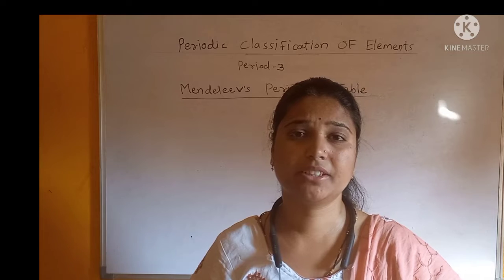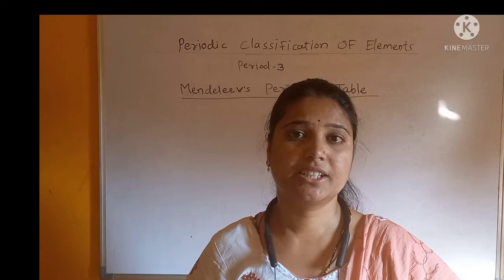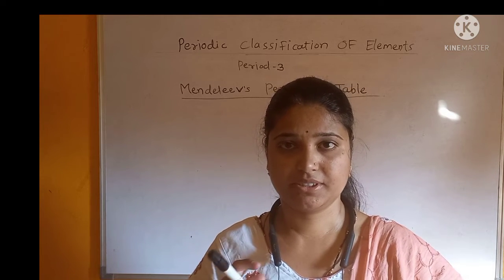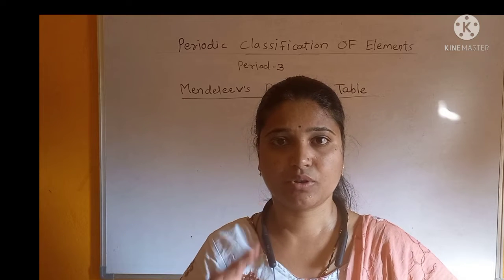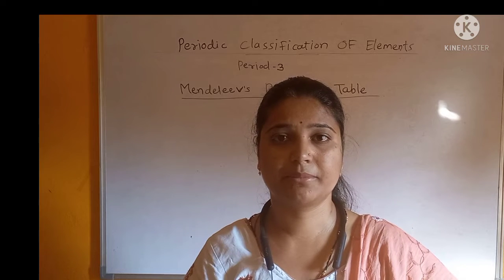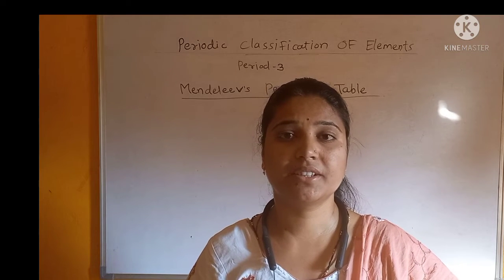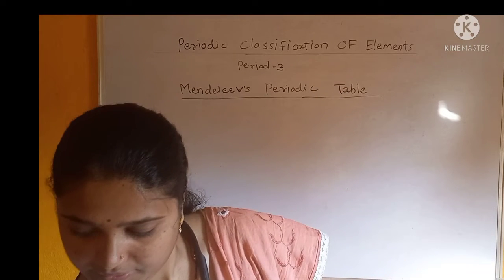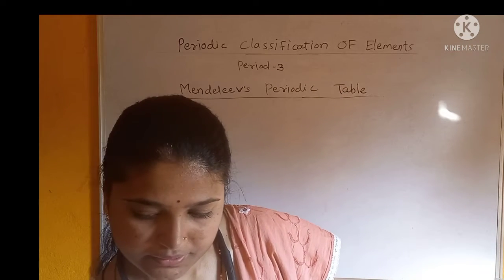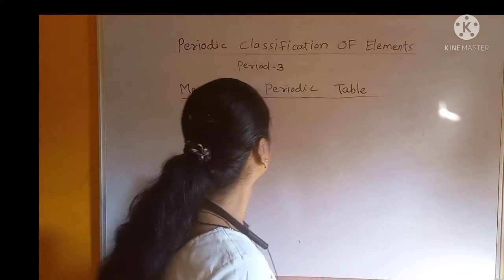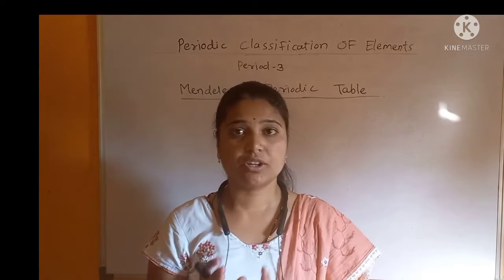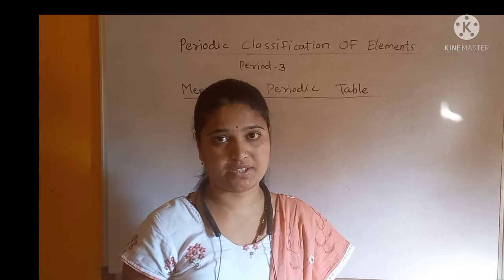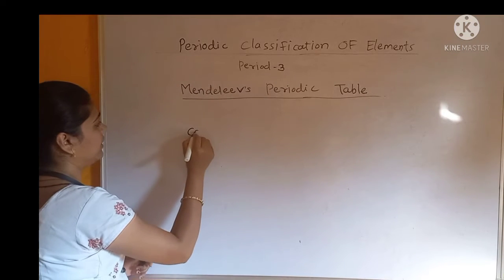He made a table — a table having some columns and some rows. He gave specific names to these rows and columns. According to Mendeleev's periodic table, the columns present in the table are called groups.